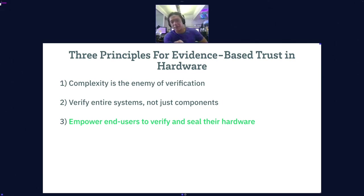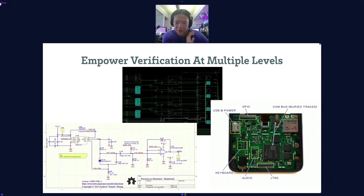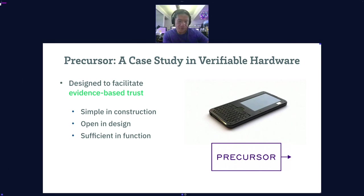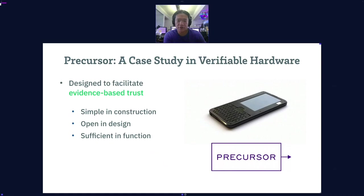The third principle is that end users need to be able to do verification themselves and ultimately seal the hardware. Verification means verification at multiple levels: circuit boards, design level, chip level — all the way down to the bottom, because there's always another turtle underneath that will cause a problem. Precursor is a case study in verifiable hardware. I wanted to put together a system that could meet these goals — to facilitate an evidence-based trust relationship with our hardware. I wanted to build something that was simple in construction, open in design, yet sufficient in function.